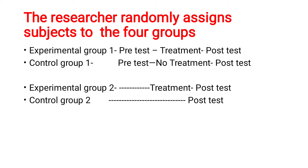First, randomly assign subjects to the 4 groups. In Experimental Group 1, you give a pre-test, then an intervention or treatment, then a post-test. In Control Group 1, you do only a pre-test — no treatment — then a post-test. In Experimental Group 2, there is no pre-test at all; you only give treatment and then assess the post-test. In Control Group 2, there is no pre-test, no treatment — only a post-test is done.